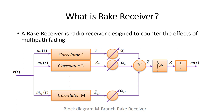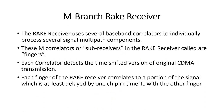To brush up: a rake receiver is a radio receiver designed to counter the effects of multipath fading. The block diagram was explained in the previous video — kindly refer to that. We will now see the detailed working of the rake receiver, specifically the M-branch rake receiver.